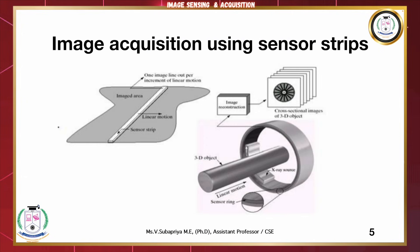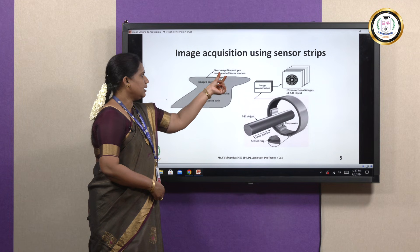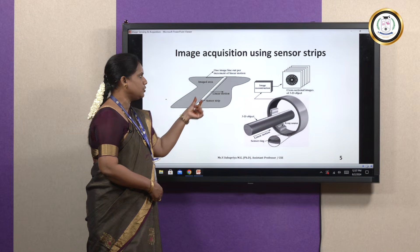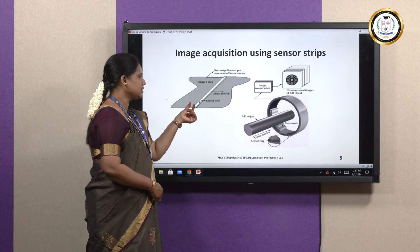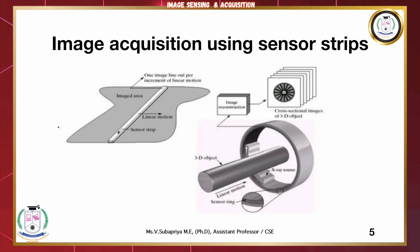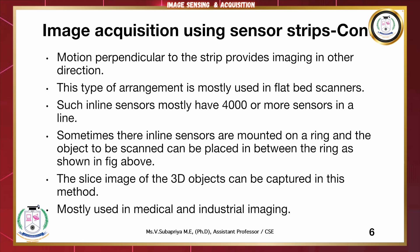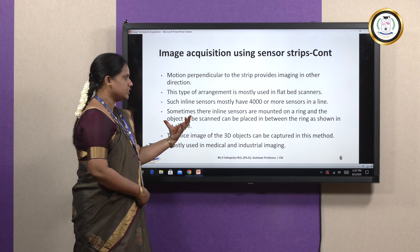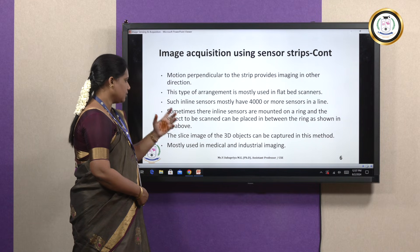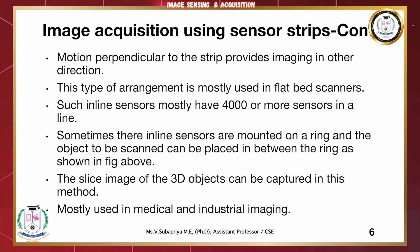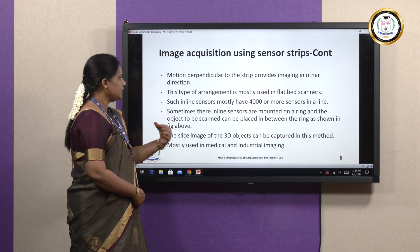Image acquisition using a sensor strip is most commonly used in flatbed scanners. A sensor strip is mounted on an imaged area and moves in a linear motion perpendicular to the imaging area. The same approach is implemented for detecting 3D images, where single sensors or line sensors are mounted on a ring to scan an object placed between the ring. This produces 3D objects through the captured image, and this type of sensor is used in medical and industrial imaging.